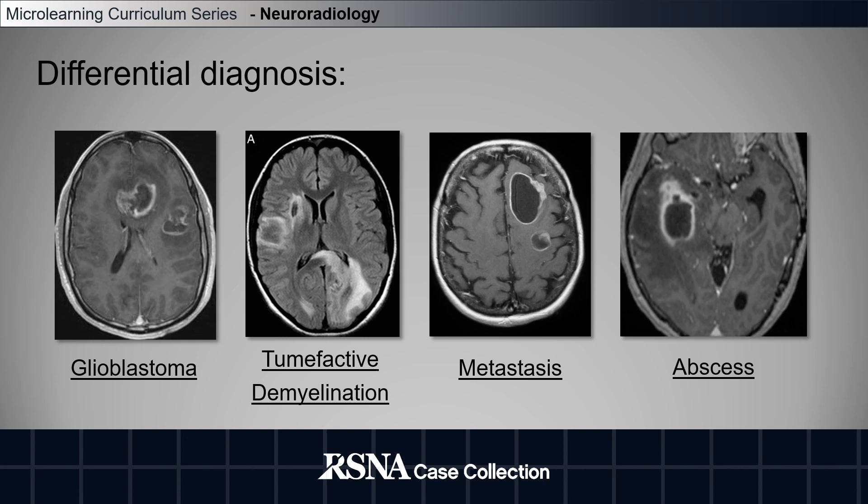The differential diagnosis for entities with a similar imaging presentation includes glioblastoma, tumefactive demyelination, metastasis, and abscess, as seen in these examples of peripherally enhancing masses.